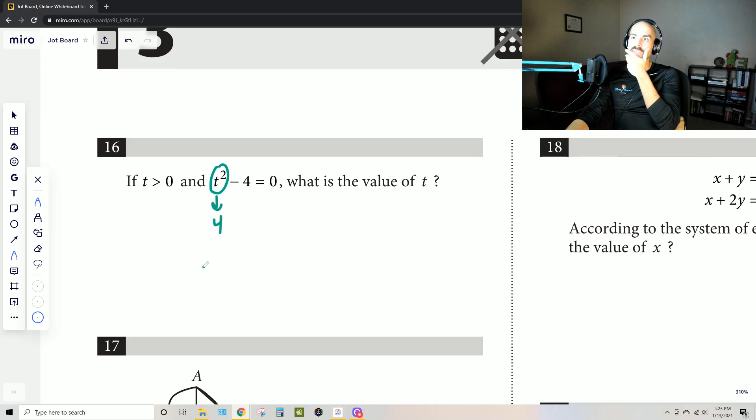And then that means that what number squared equals 4? Well, that's 2, and so obviously that must mean that the value of t equals 2.